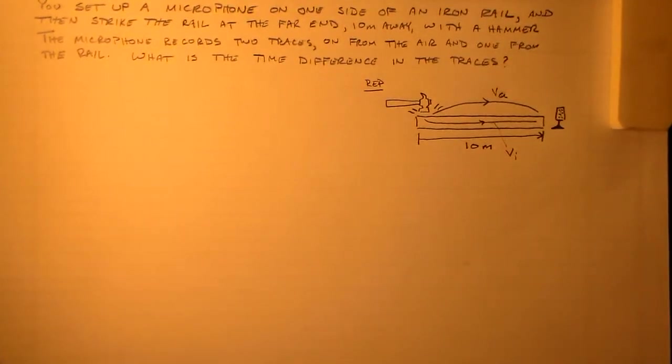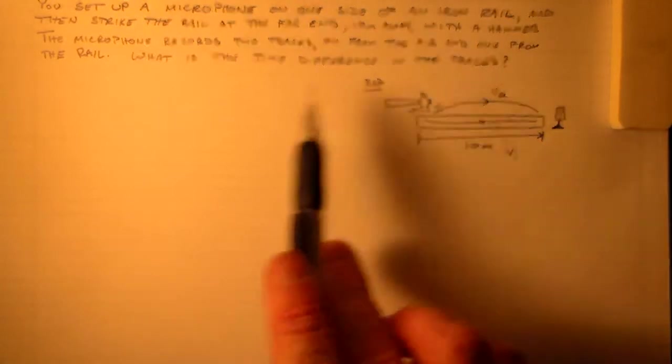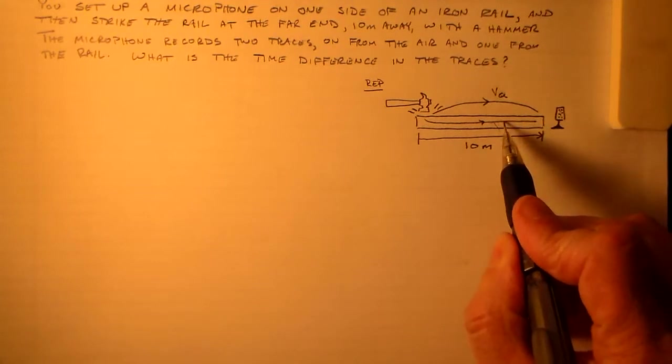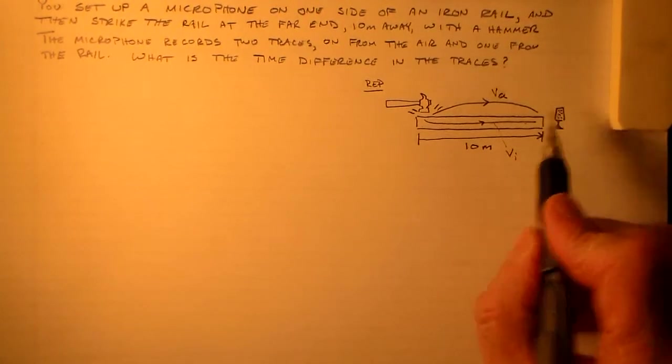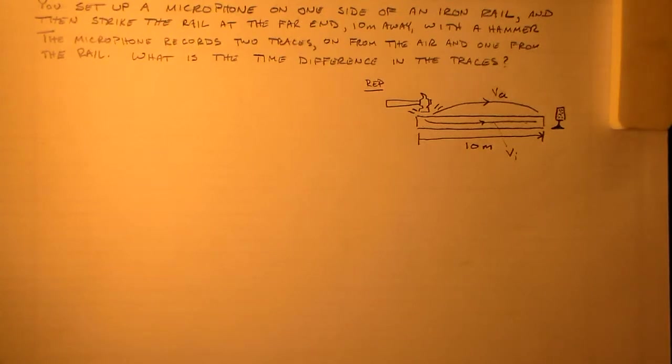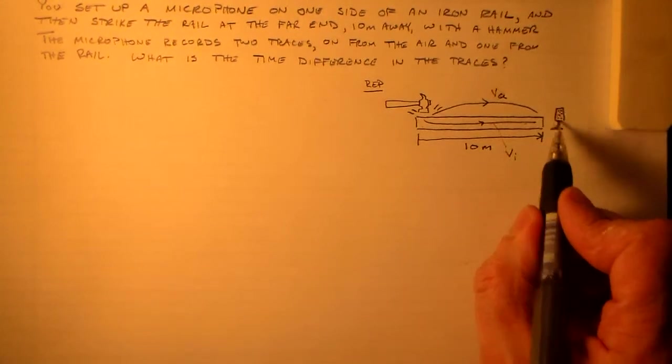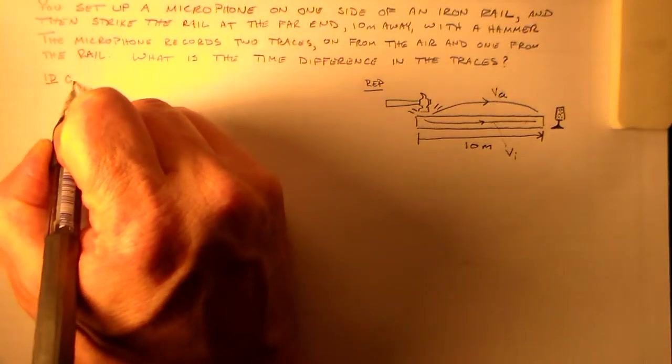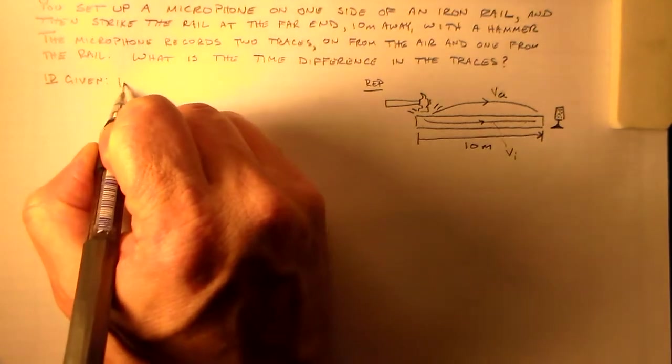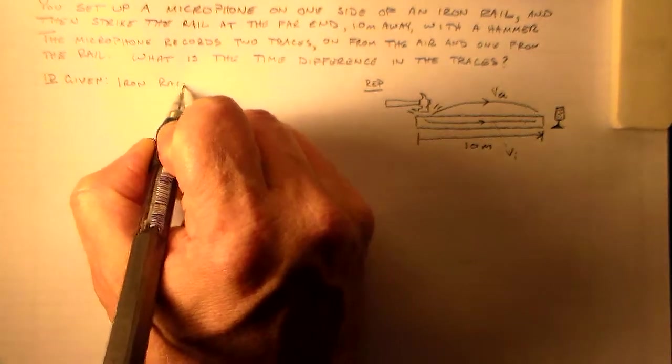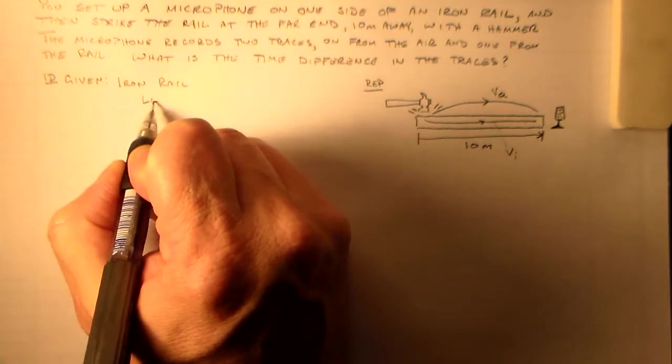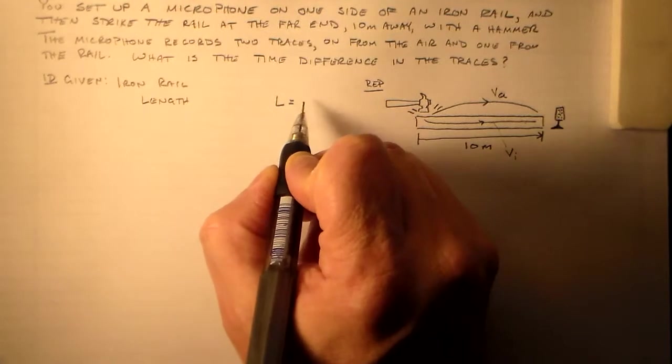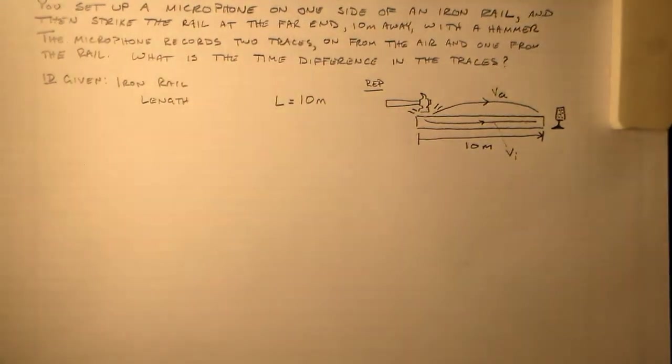And so what I want to know is, what is the delay, what is the difference between the time that this trace gets here and that trace gets here? So that's the delay between the two sounds, the two pickups on the microphone. So let's see. Let's identify what we have. We have an iron rail. It has some length. That length, L, is equal to 10 meters.